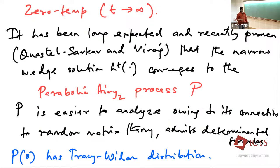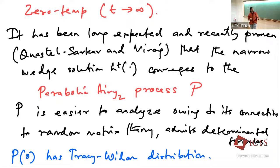This is significantly easier to analyze because of the random matrix connections. A lot more is known about the parabolic Airy process. In particular, the one-point distribution of this process is the Tracy-Widom distribution, which arises as the scaling limit of the largest eigenvalue of a Gaussian matrix. The moral is that you have two closely related processes; one of them is determinantal and allows more analysis, but you should expect similar behavior for all large enough times.